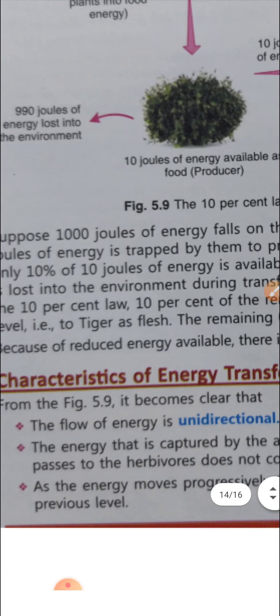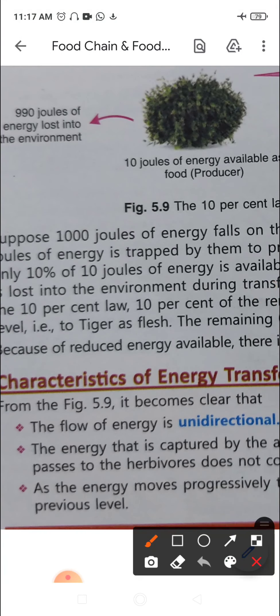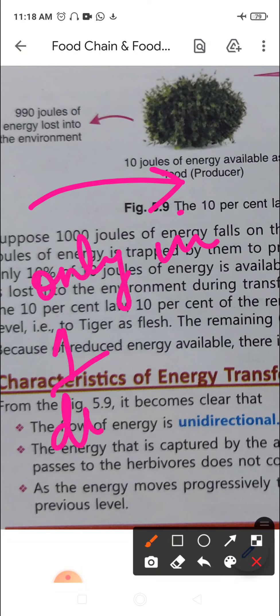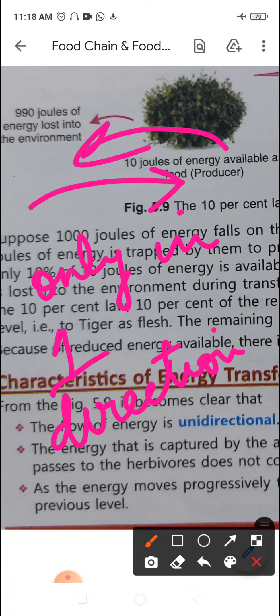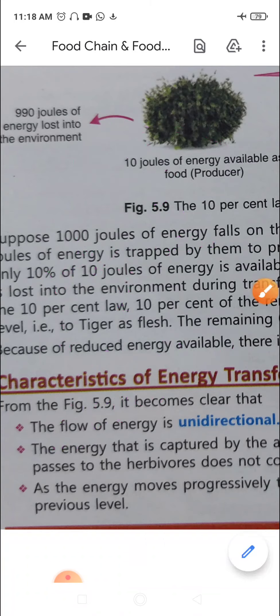Now, the characteristics of energy transfer: the flow of energy is unidirectional — it can be transferred only in one direction and cannot be reversed. The energy captured by autotrophs does not revert back to the sun, and energy passed to herbivores does not come back to autotrophs. As energy moves progressively through various trophic levels, it is no longer available to the previous level.